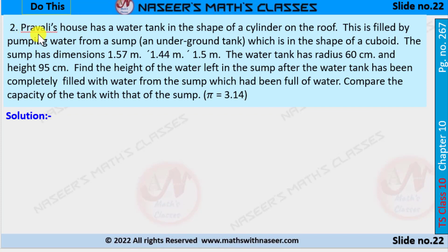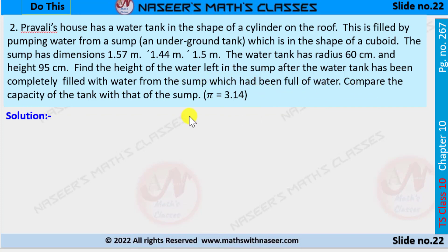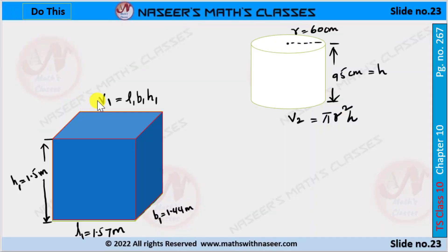In this problem it is given that a house has a water tank in the shape of a cylinder on the roof. This is filled by pumping water from the sump, an underground tank which is in the shape of a cuboid. The sump has dimensions 1.57 meters, 1.44 meters, 1.5 meters. The water tank has a radius of 60 centimeters and a height of 95 centimeters. Find the height of the water left in the sump after the water tank has been completely filled with water from the sump, which had been full of water. Compare the capacity of the tank with that of the sump. Use pi equal to 3.14.